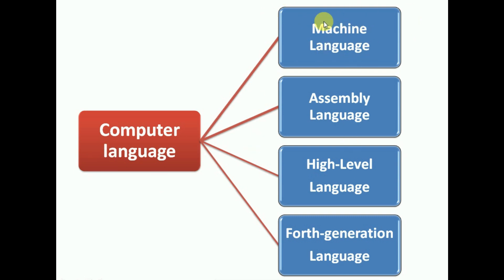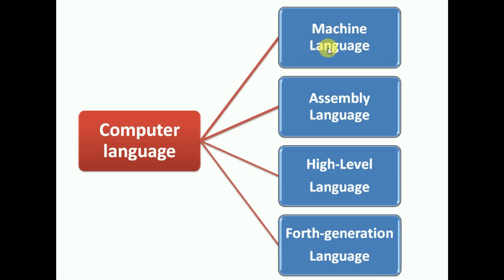Computer language is categorized into four categories: machine language, assembly language, high level language, and fourth generation language. Gradually, as computers developed, the complexity of programs increased. Machine language is very close to the hardware, while fourth generation language is what human beings understand very easily.